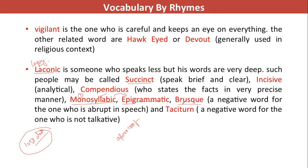Brusque is a negative word — one who has a habit of interrupting or intruding into speech. If a third person keeps intruding into a conversation between two people, that person is brusque. Taciturn is also a negative word — the quality of a person who does not speak and is not talkative at all, not comfortable in talking. So again, we've learned so many different words by relating them to a single nursery rhyme.